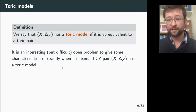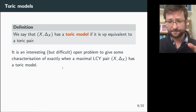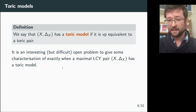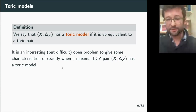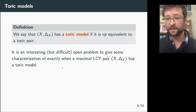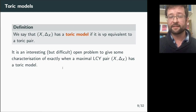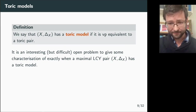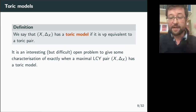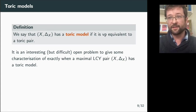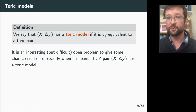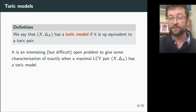All toric pairs are volume-preserving equivalent to each other, since the interior of any toric variety is a torus, and an isomorphism between two tori extends to a volume-preserving map after blowing up. We say a pair has a toric model if it is volume-preserving equivalent to a toric pair — these are the simplest examples and the simplest birational equivalence class of maximal log-Calabi-Yau pairs. However, characterizing exactly when a maximal log-Calabi-Yau pair is volume-preserving equivalent to a toric pair remains a very difficult problem.